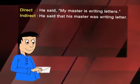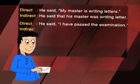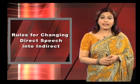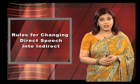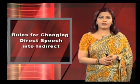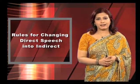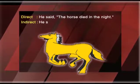A present perfect becomes a past perfect. Direct: He said, 'I have passed the examination.' Indirect: He said that he had passed the examination. The 'shall' of the future tense is changed into 'should'. The 'will' of the future tense is changed into 'would' or 'should'. Direct: He said, 'Will you listen to such a man?' Indirect: He asked them whether they would listen to such a man. As a rule, the simple past in the direct becomes the past perfect in the indirect. Direct: He said, 'The horse died in the night.' Indirect: He said that the horse had died in the night.